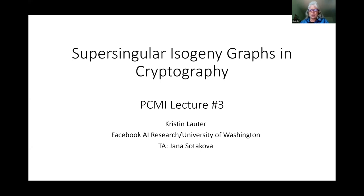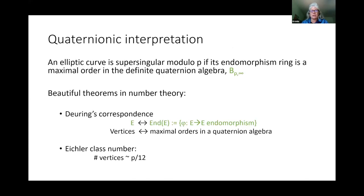For my third lecture, if you remember, at the end of the second lecture we started to talk about quaternion algebras and specifically the quaternion interpretation of the supersingular isogeny graph. Just to recall, the idea is that for a supersingular elliptic curve, if you associate to it its endomorphism ring — which is a maximal order in a quaternion algebra — you get a different graph where the vertices are maximal orders in this quaternion algebra.